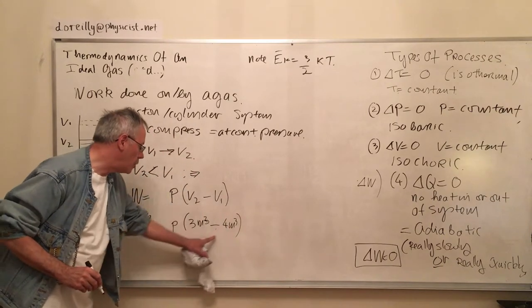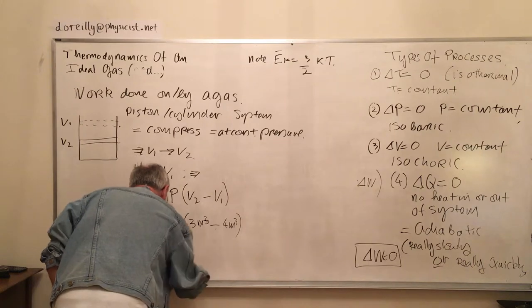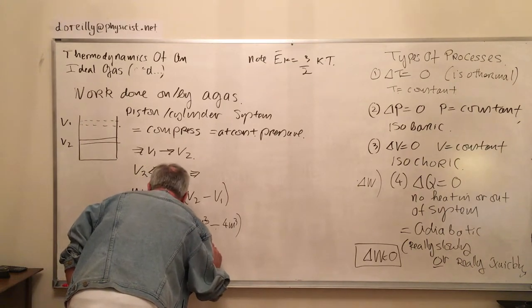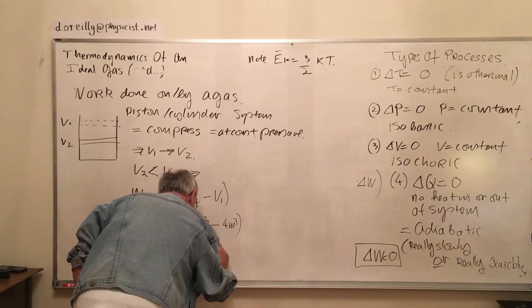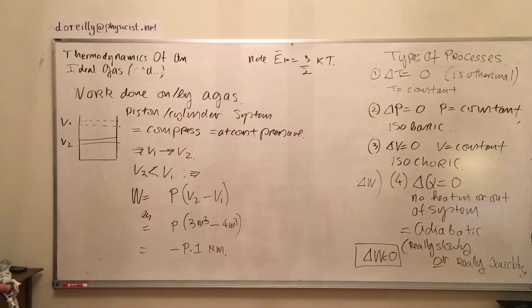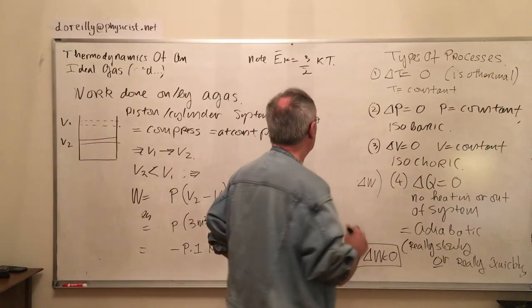And we'll begin by compressing at constant pressure. Suppose we compress from 4 to 3 meters cubed - this quantity is going to be negative. Of course the units are newton meters. However, when we compress a gas we put work into it.